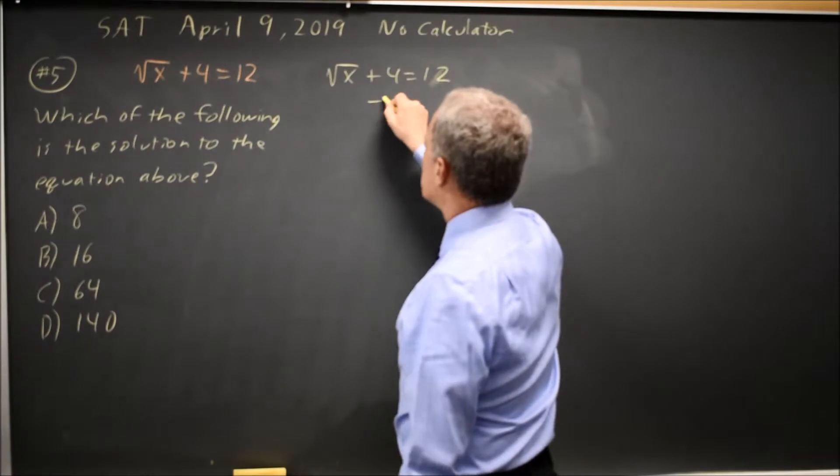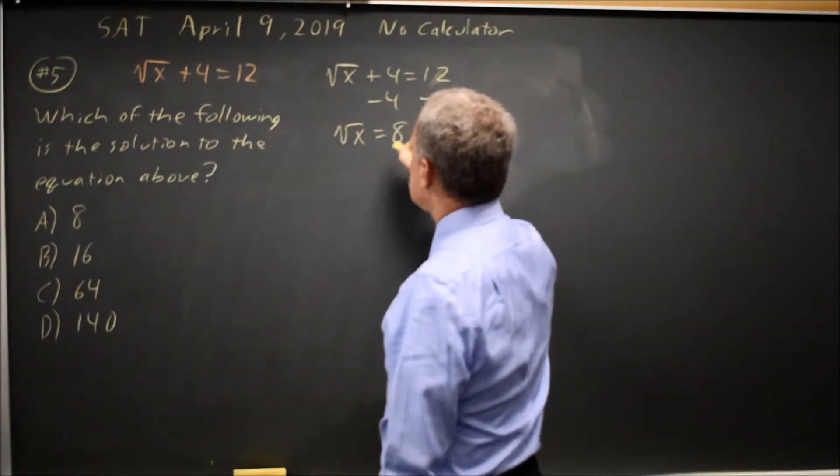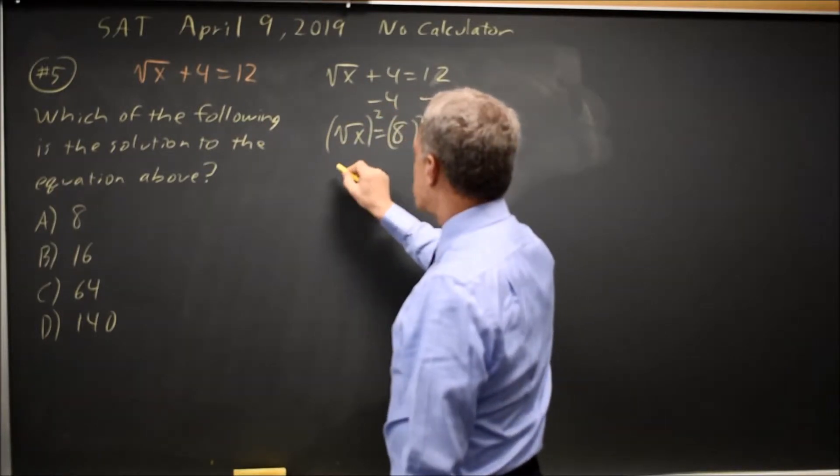First thing we want is the square root by itself, so let's subtract 4 from both sides. Square root of x equals 8. And to get rid of the square root, we square both sides, but only when the square root is by itself.